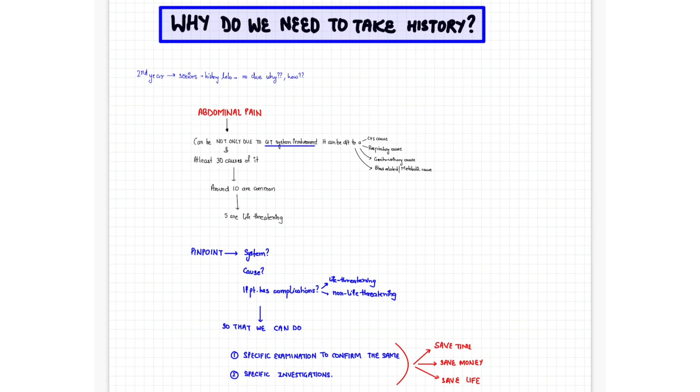Normally what I think is if a patient has abdominal pain, probably the patient might have a problem in the gastrointestinal system. But in reality the cause for abdominal pain can be many. There can be different systems involved: it can be due to cardiovascular cause, respiratory cause, or genitourinary cause.